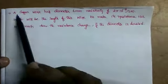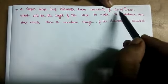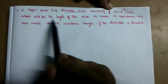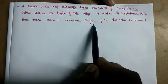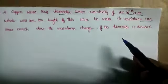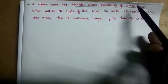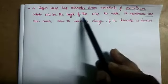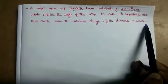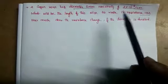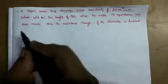Second problem: A copper wire has diameter 1 mm and resistivity 2×10⁻⁸ ohm-meter. Find the length of the wire to make its resistance 10 ohms. Also find how much the resistance changes if the diameter is doubled. Given: diameter of copper wire is 1 mm, which equals 1×10⁻³ meters.